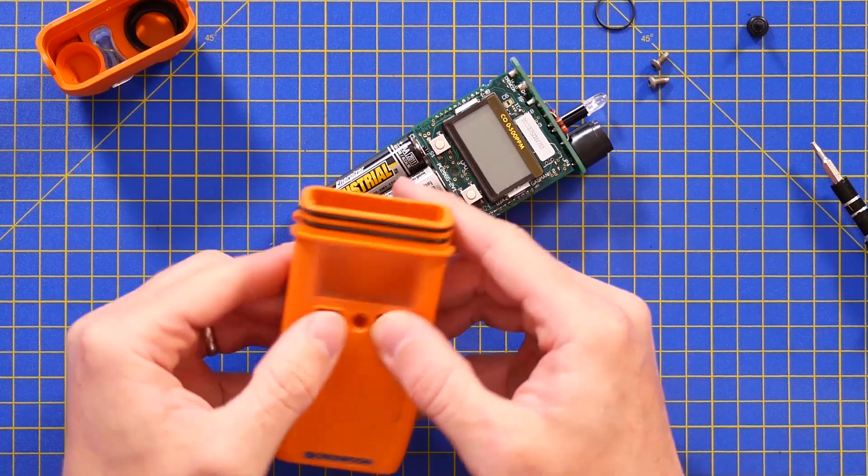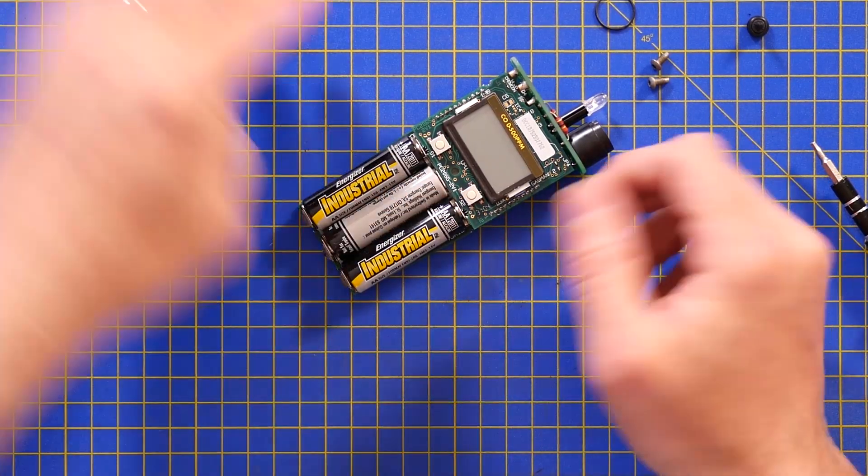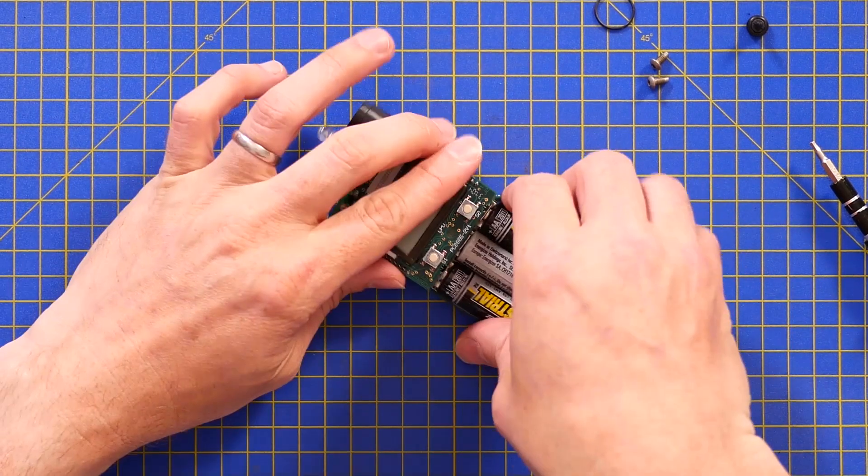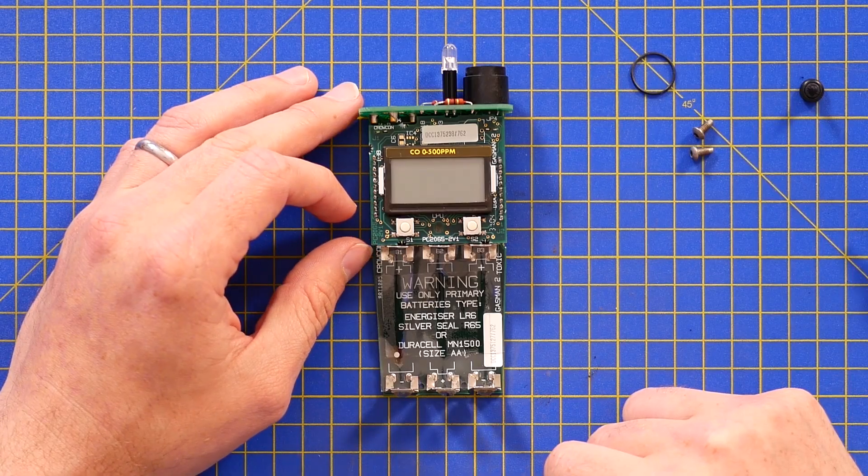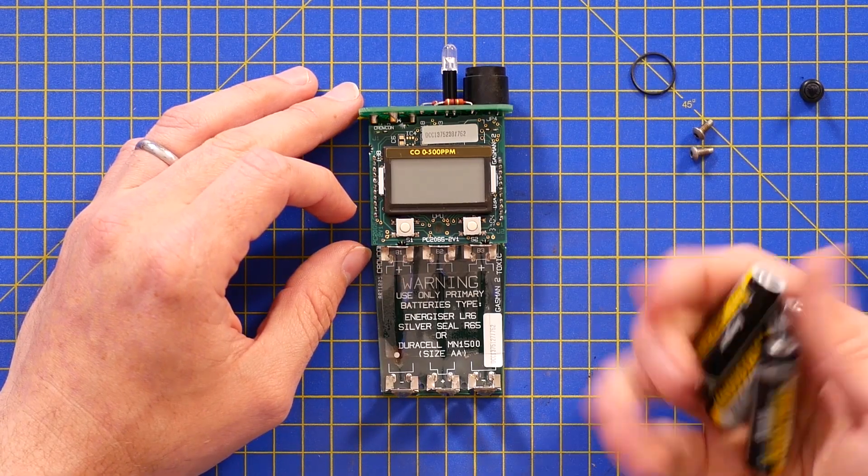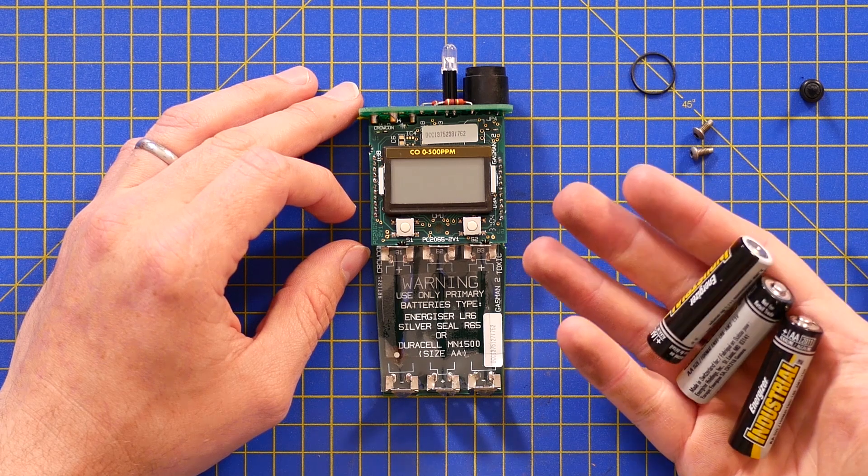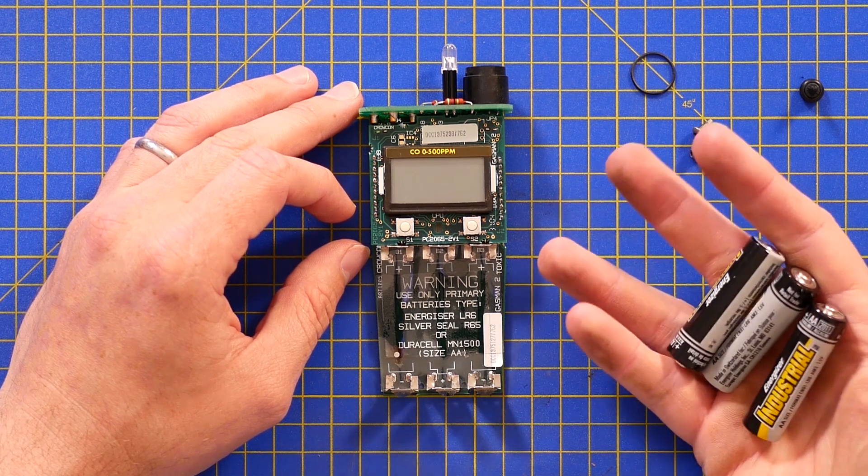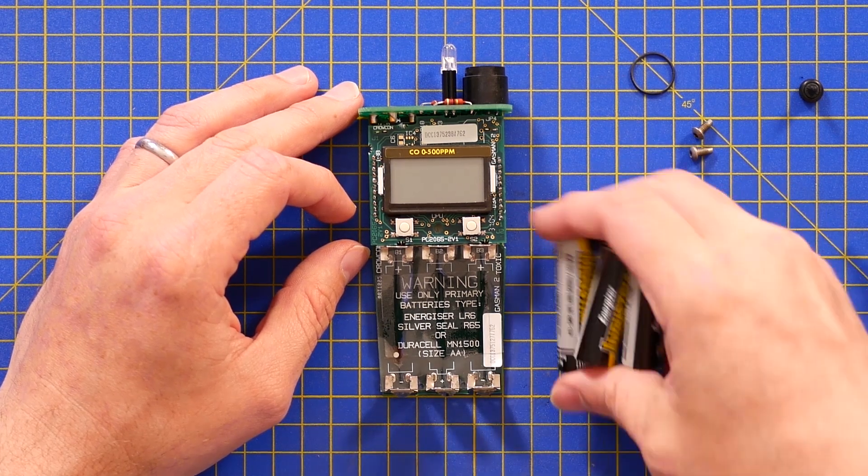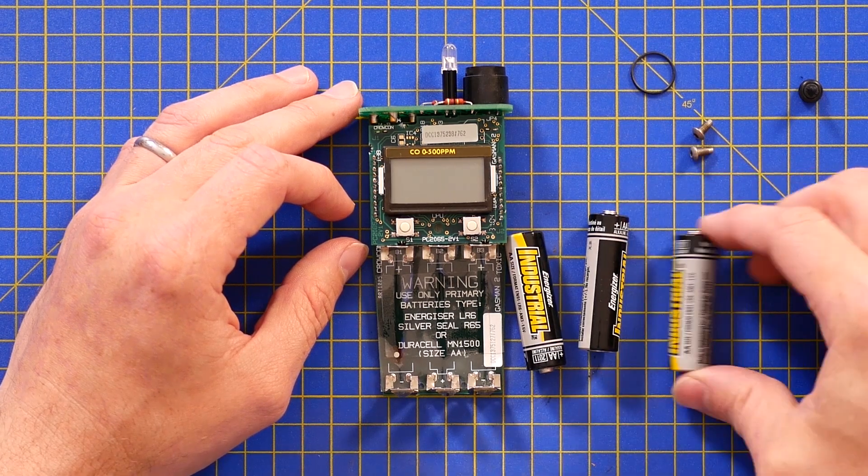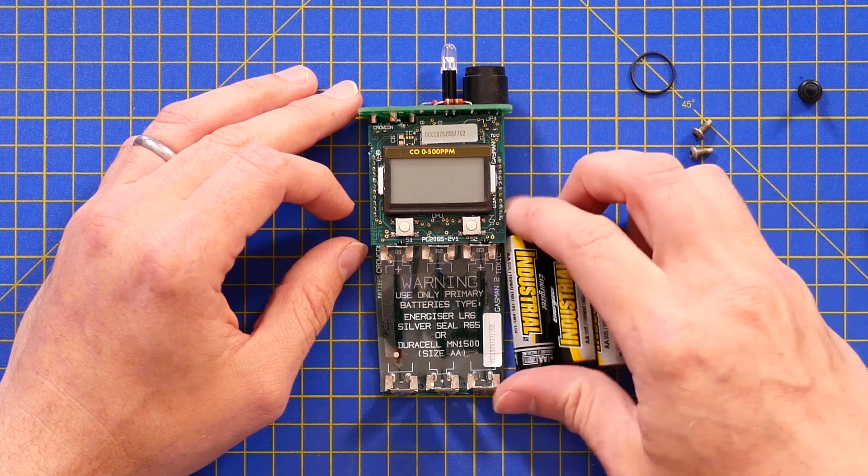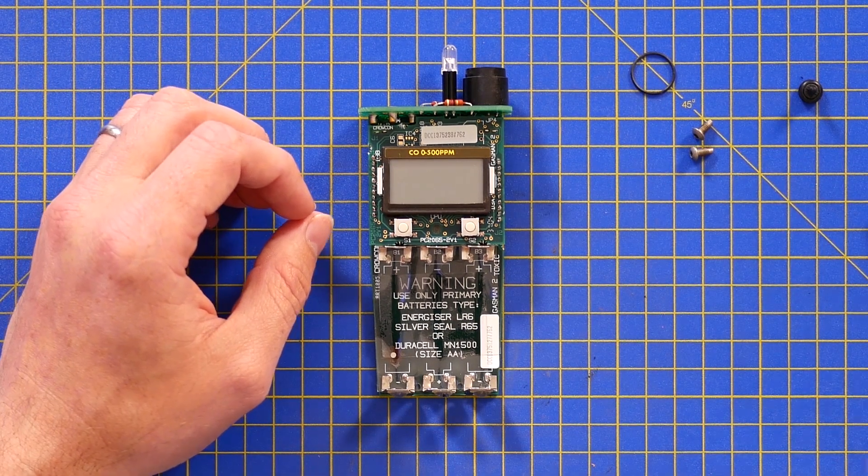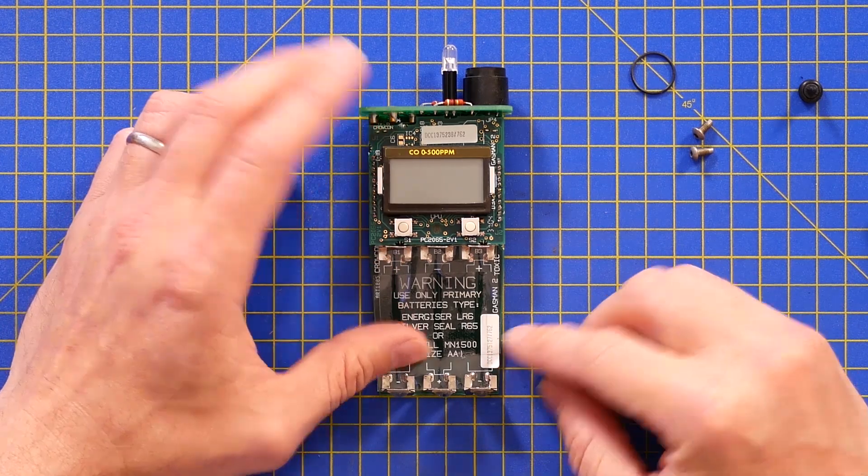Ah-ha. It's a plastic case with membrane seals around the buttons, and three double-A batteries. Warning, only primary battery type. Energizer, Silver Seal, or Duracell. There's some battery snobbery in there for you. To give you a clue of when this thing was last in use, the expiry date on these batteries is 2011. So the batteries expired 10 years ago. I think it's safe to say this unit is well and truly defunct.